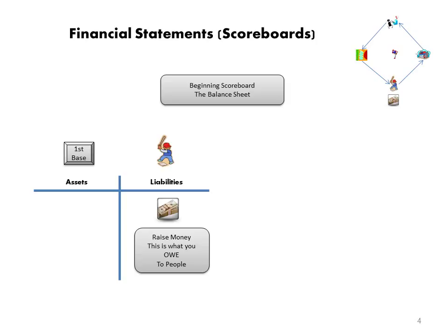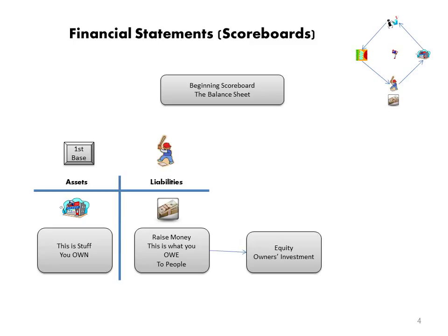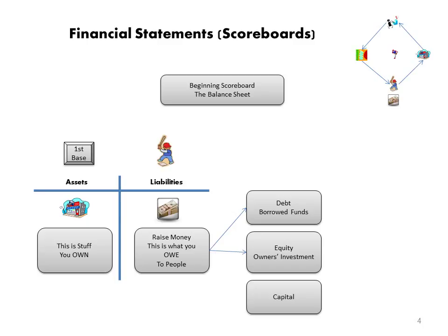Once you have raised this money that you owe to people, you can use it to acquire stuff. You can go to first base and acquire stuff, and that we call assets — buildings, equipment, etc. Here we have the beginning of the company — home plate to first base — and it shows what we have to do to get started. Raising the money can come from what you contribute, the owner's investment, which we'd call equity, or what you borrow from a bank, called debt. You have raised money through equity and debt, and all of this we would call financial capital. This is what allows you to acquire the physical assets or the stuff to start the business. Home plate to first base — that is our balance sheet.